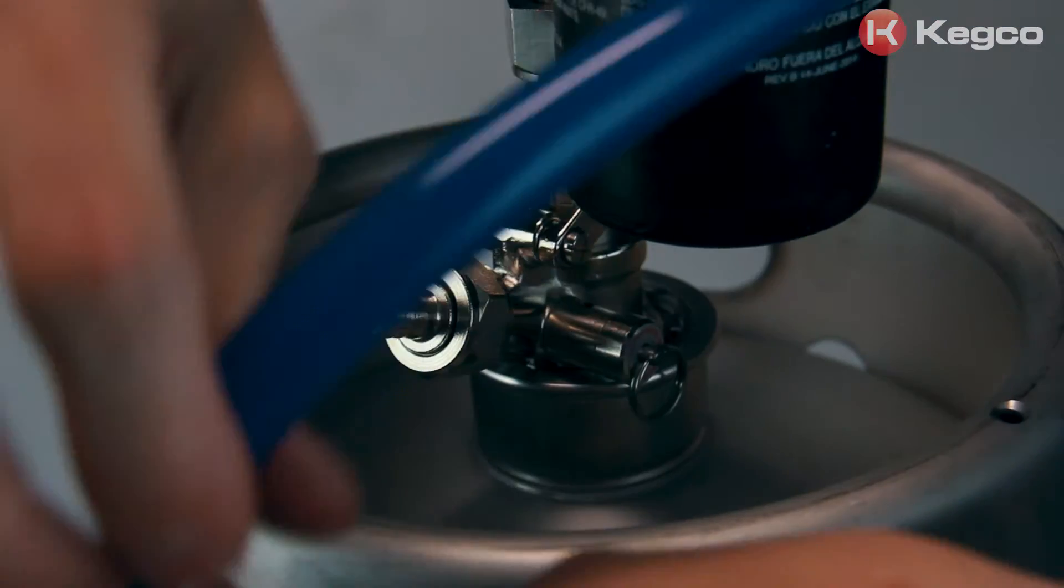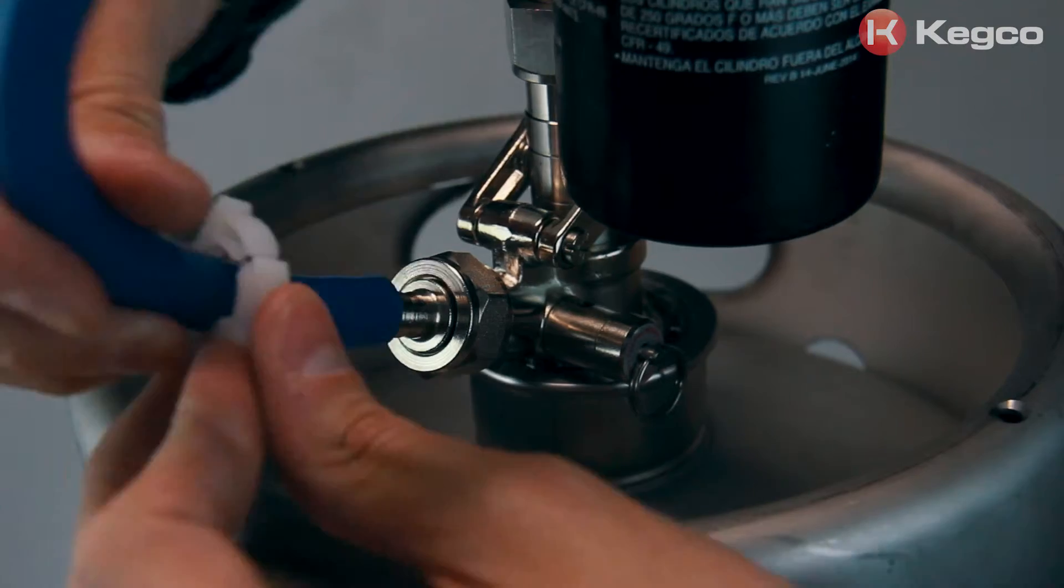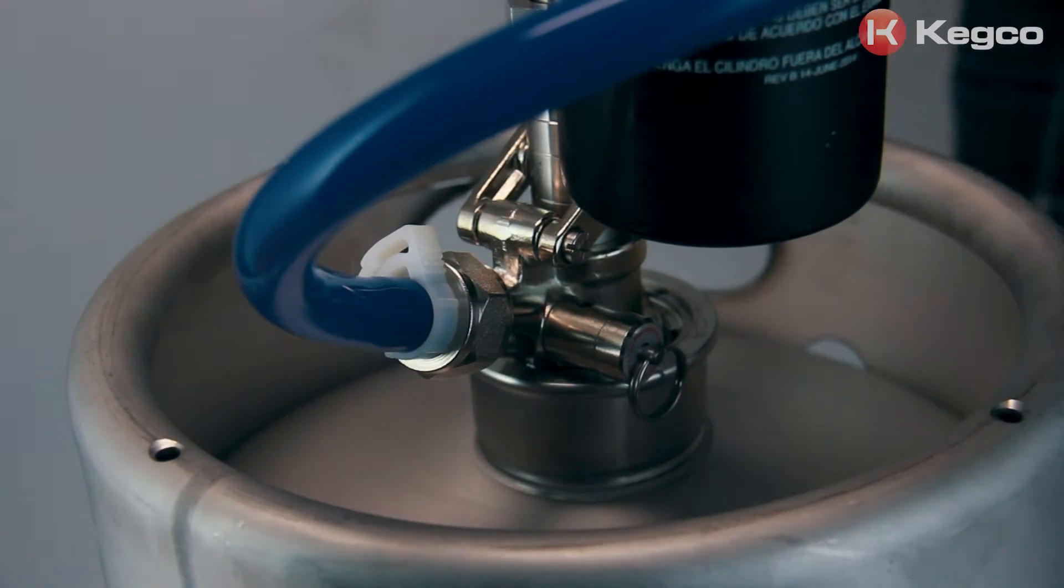You will need an airline with a 1/4 inch MFL fitting to connect the regulator to the gas inside of the keg coupler.